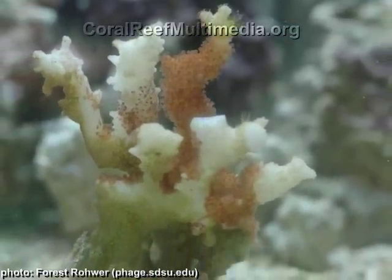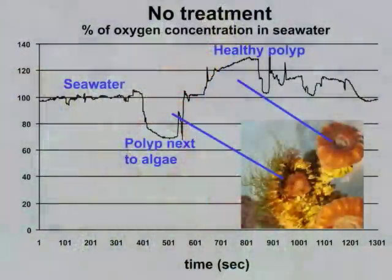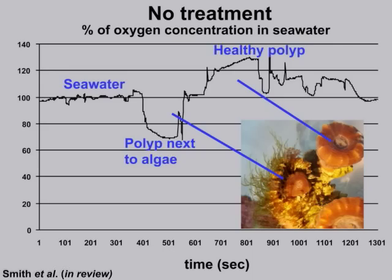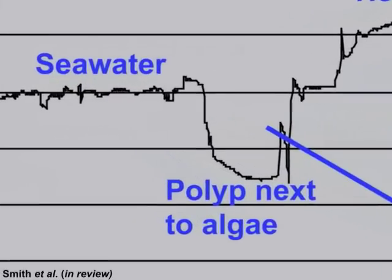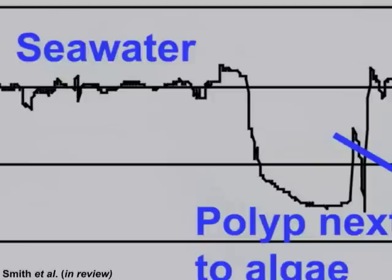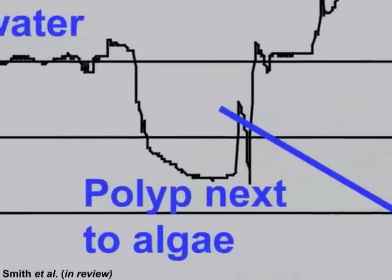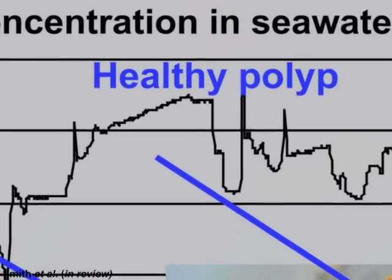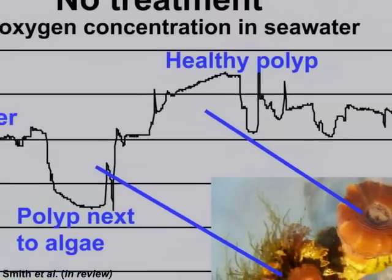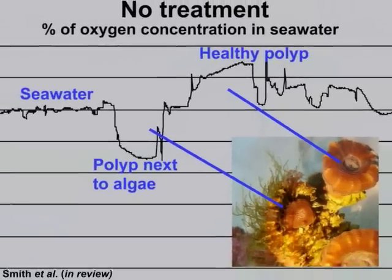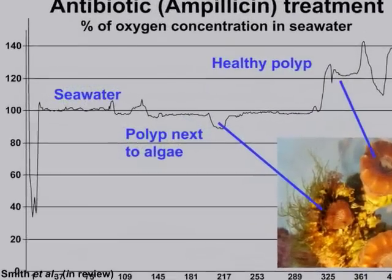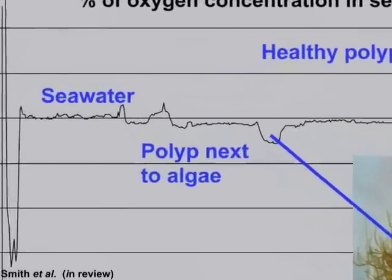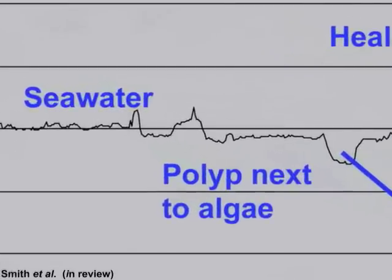A recent investigation demonstrates this process by looking at the oxygen levels around the coral polyps. Oxygen levels were found to be low around coral polyps juxtaposed along the invasive algae due to increased microbial activity, while coral polyps distant from the algae have normal levels of oxygen. A low level of oxygen, known as hypoxia, is analogous to suffocation for the coral animal. The same coral was later treated with the antibiotic ampicillin, reducing the bacteria along the boundary and subsequently restoring oxygen to a normal level.